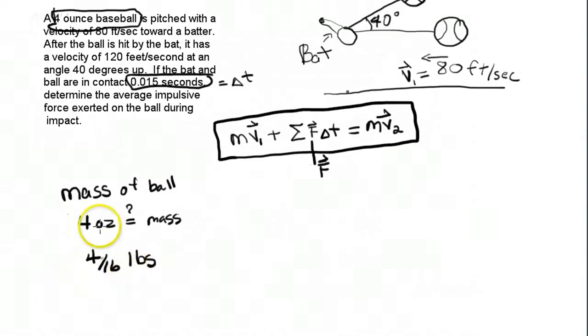We divide that by the gravitational constant, 32.2 feet per second squared, and we get the mass in slugs.